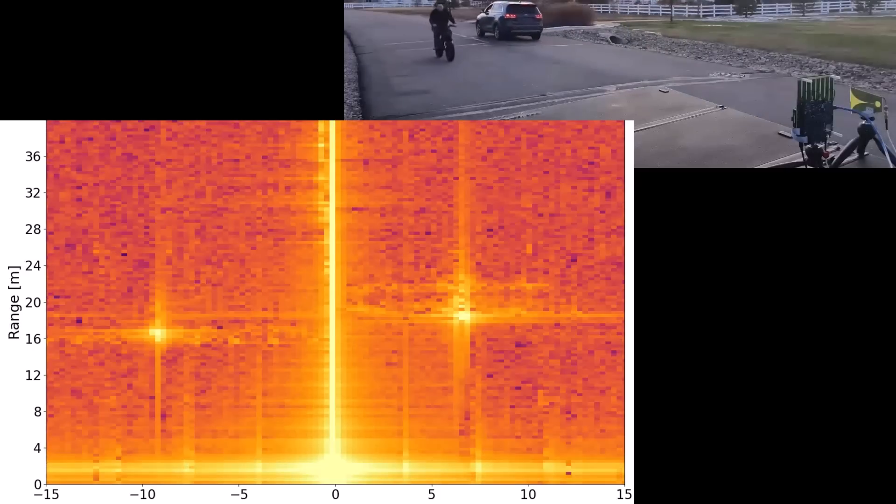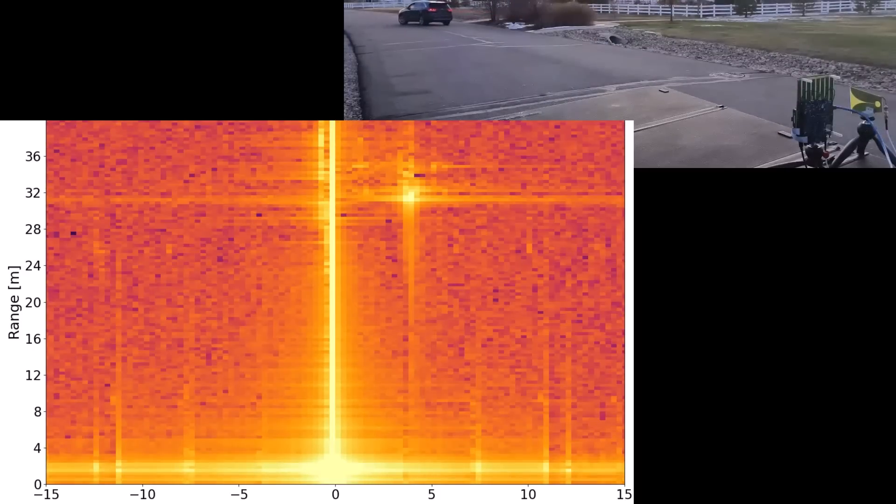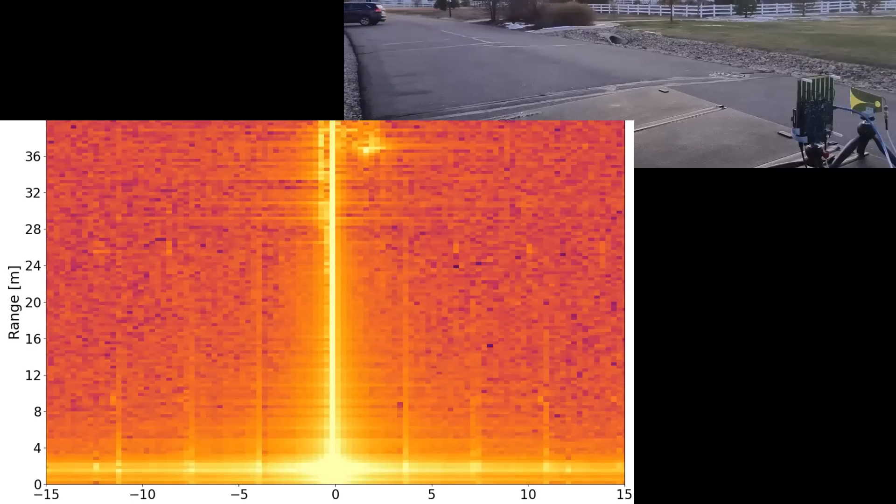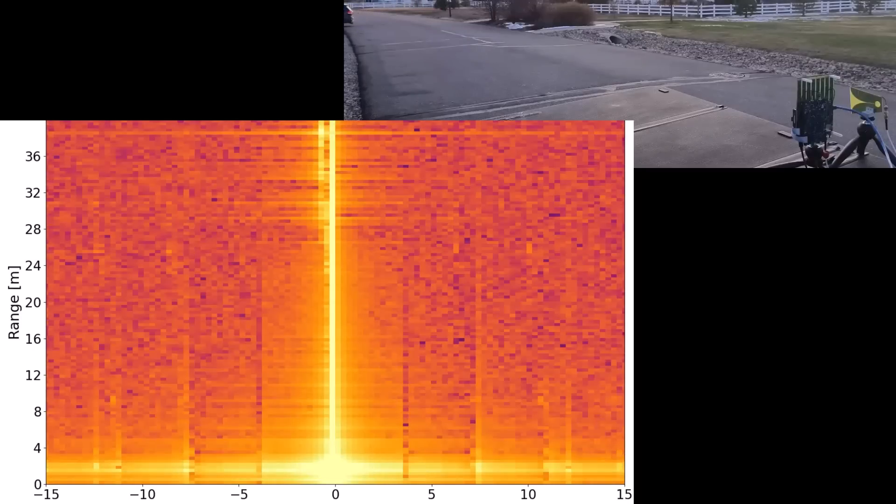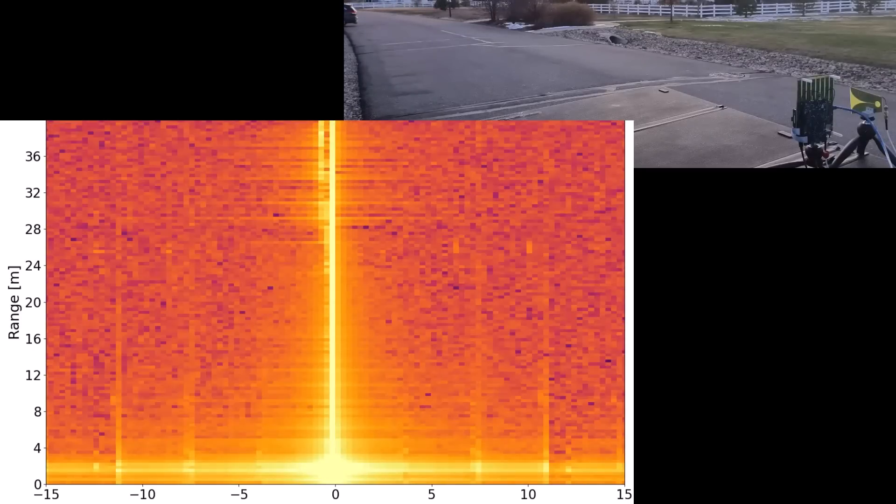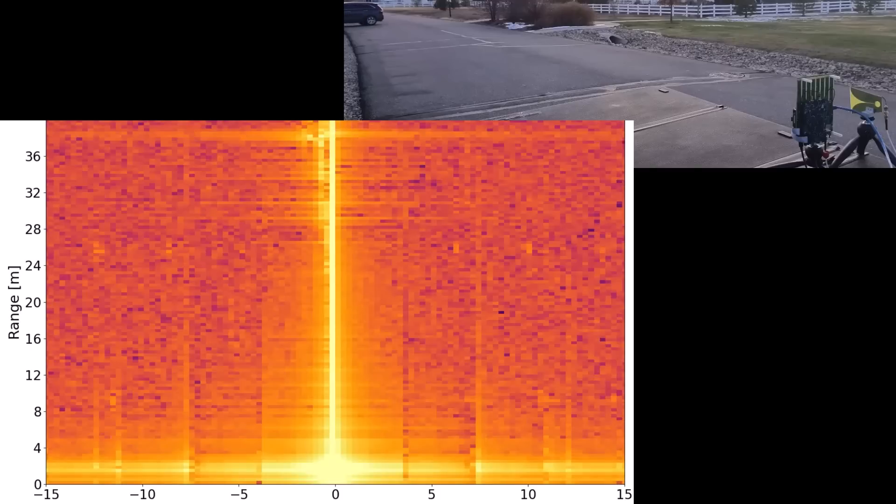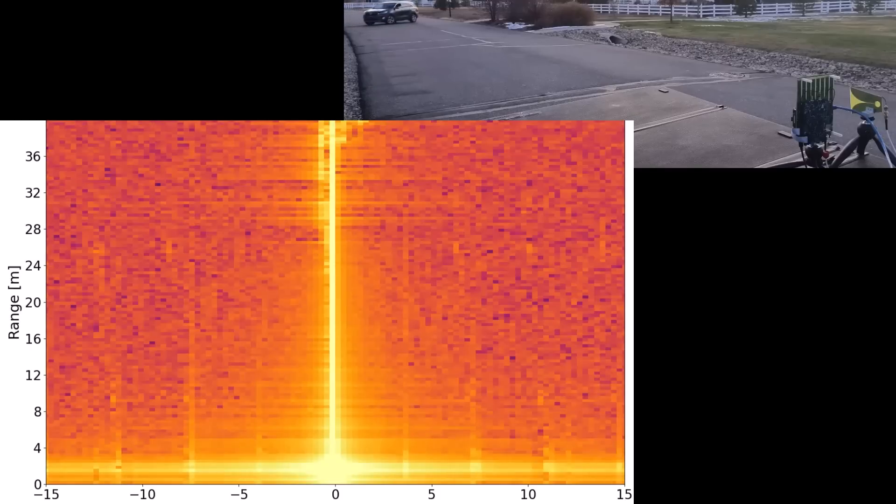And that is because in a CW system, both transmit and receive are on at the same time. And of course, our transmit power is going to be much higher power than anything we could get back on the receiver. So it's very common to see some kind of bright point at 0 velocity and 0 range.